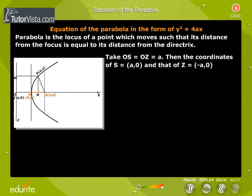Take OS equal to OZ equal to A. Then the coordinates of S are (a, 0) and that of Z is (-a, 0). Now S is (a, 0) and P is (x, y).